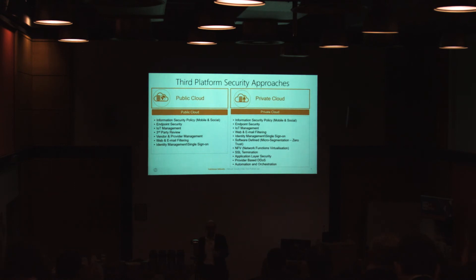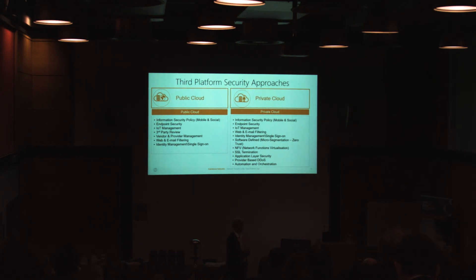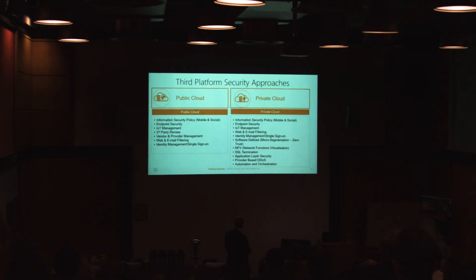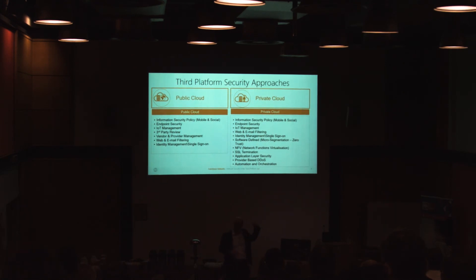For those building their own infrastructure: software-defined technologies allow you to bring the security policy closer to the server and to where your services are running. SSL termination is something to think about — encrypting almost everything you can and having an infrastructure that allows you to do that efficiently. Provider-based DDoS is important — if you have a 10-gig internet pipe and somebody's throwing 1.2 terabits at you, an on-premise device is irrelevant, so you need to talk to your ISP about provider-based DDoS services. And automation and orchestration ensures you're always deploying exactly as you want.